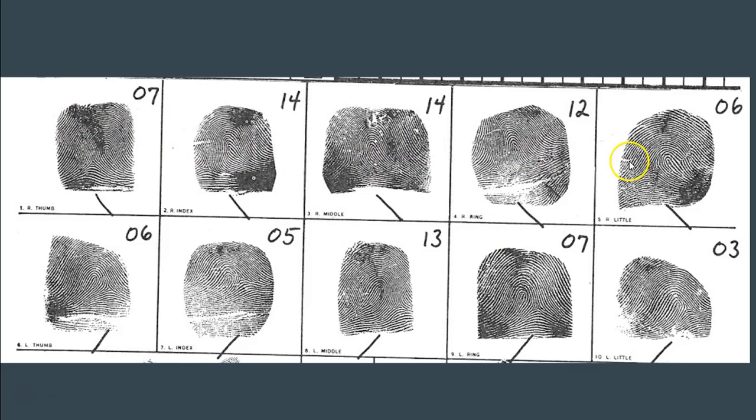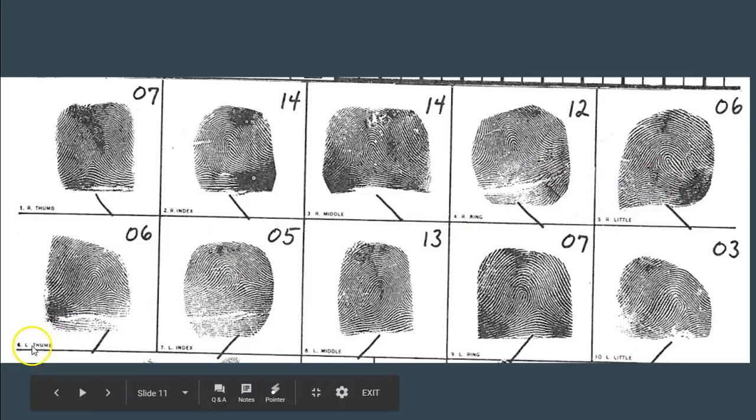When doing a primary, we're going to be looking at certain finger numbers. Every fingerprint on the fingerprint card has a number. The right hand fingers are on top: finger 1 is the right thumb, 2 is the right index, 3 is the right middle, 4 is the right ring, 5 is the right little finger. Then finger 6 is the left thumb, 7 the left index, 8 the left middle, 9 the left ring, and 10 is the left pinky finger.